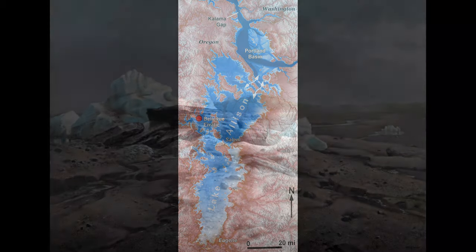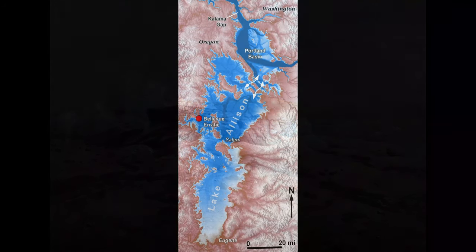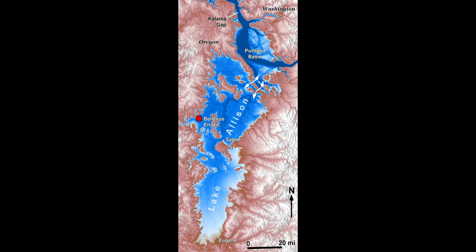Here's an image of the Bellevue erratic painted by my friend Stevominski, as it might have appeared not long after the erratic-bearing iceberg grounded along the western margin of Lake Allison. Lake Allison probably only lasted a couple weeks or less before all the floodwater drained out to the Pacific Ocean.